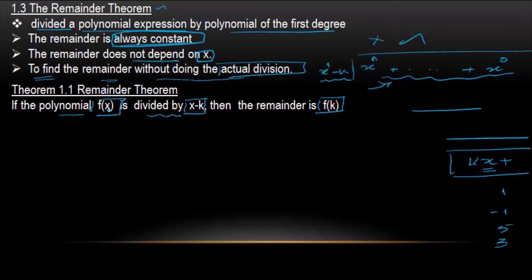So we can see that the polynomial divided by x minus k gives remainder equal to f of k. Proof.